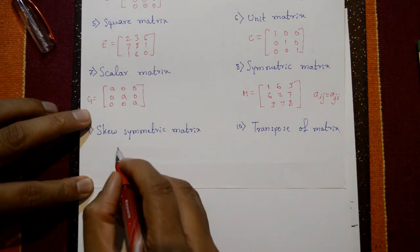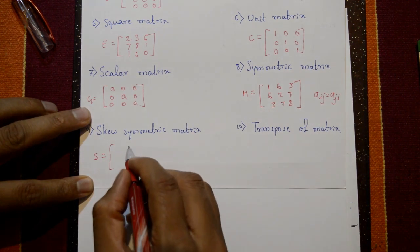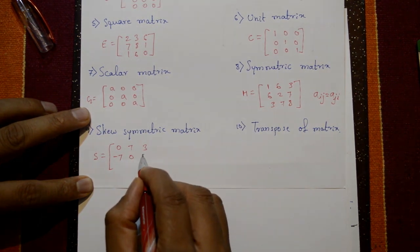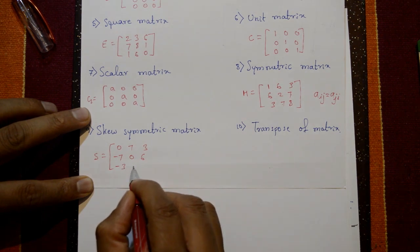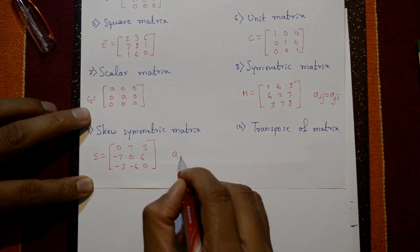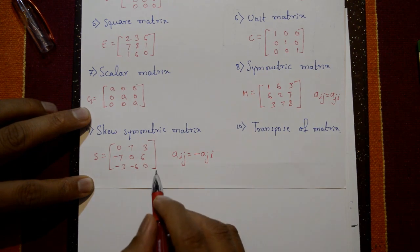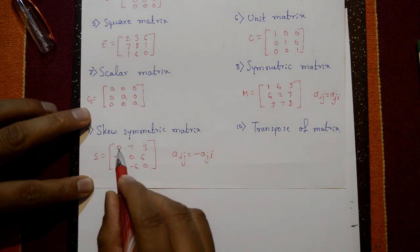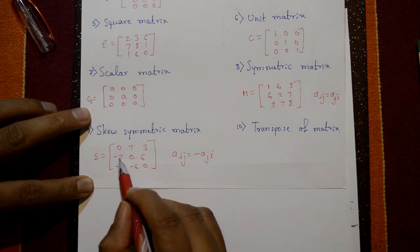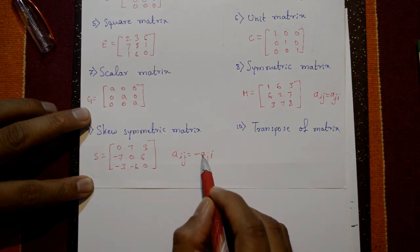The skew symmetric matrix has the form: [0, 7, 3 / −7, 0, 6 / −3, −6, 0]. It satisfies aij equal to minus aji, and the diagonal elements are always zero. The remaining elements are pairs like 7 and −7, 3 and −3, 6 and −6.